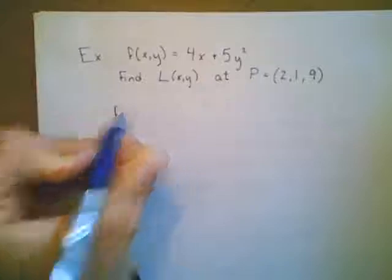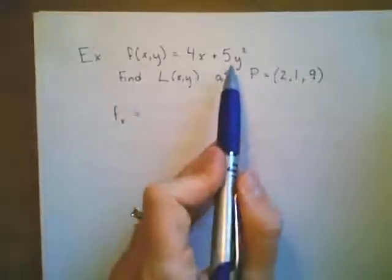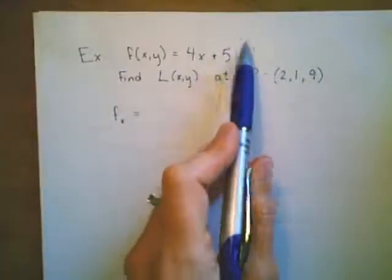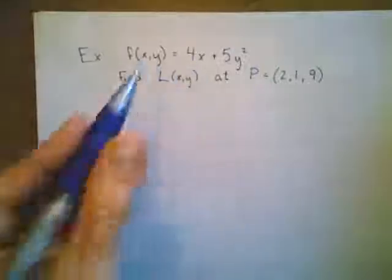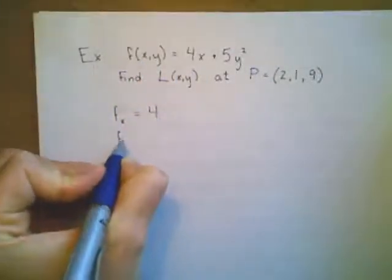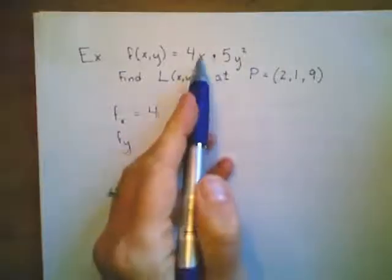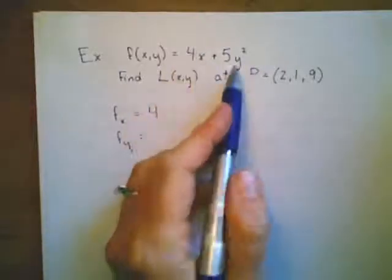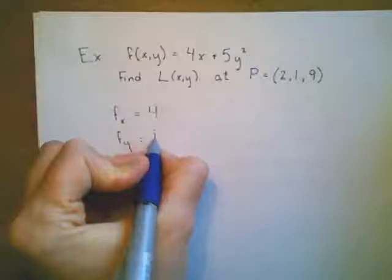First, let's compute our partial derivative with respect to x. That's treating y as a constant. So this constant term just becomes 0. And the derivative of 4x is 4. My partial derivative with respect to y, treating x as a constant, this term goes to 0, and I get 10y.